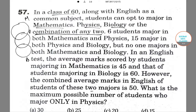6 students major in both Mathematics and Physics, and 15 major in both Physics and Biology, but no one majors in both Mathematics and Biology. In an English test, the average marks scored by students majoring in Maths is 45, and that of students majoring in Biology is 60.